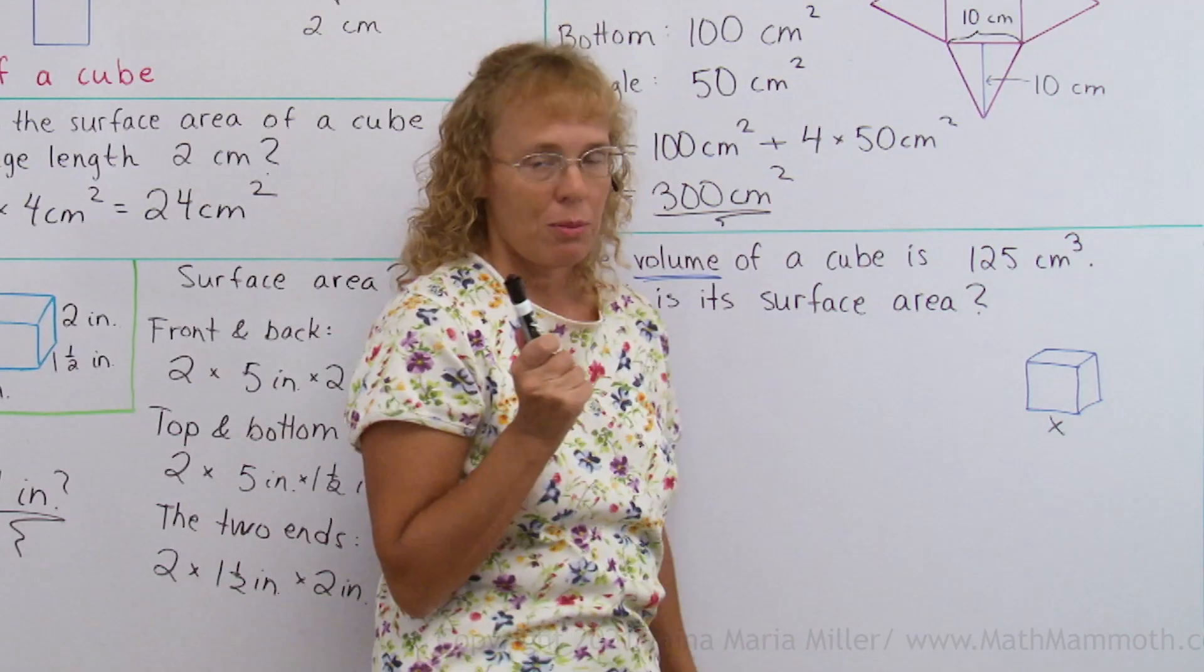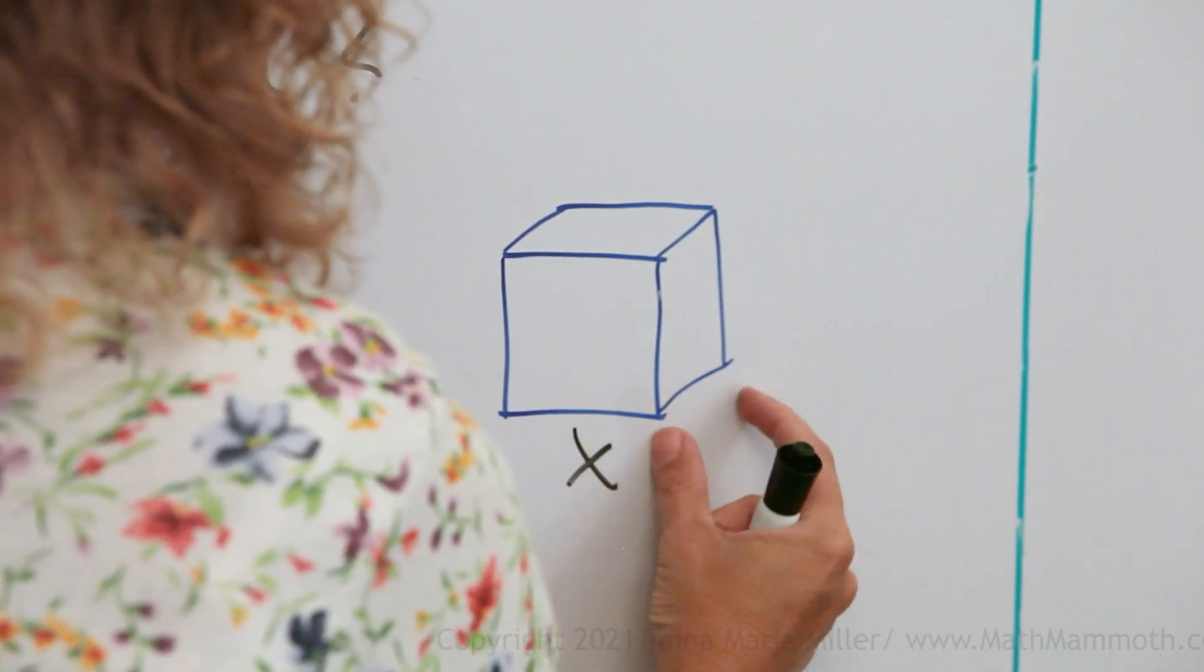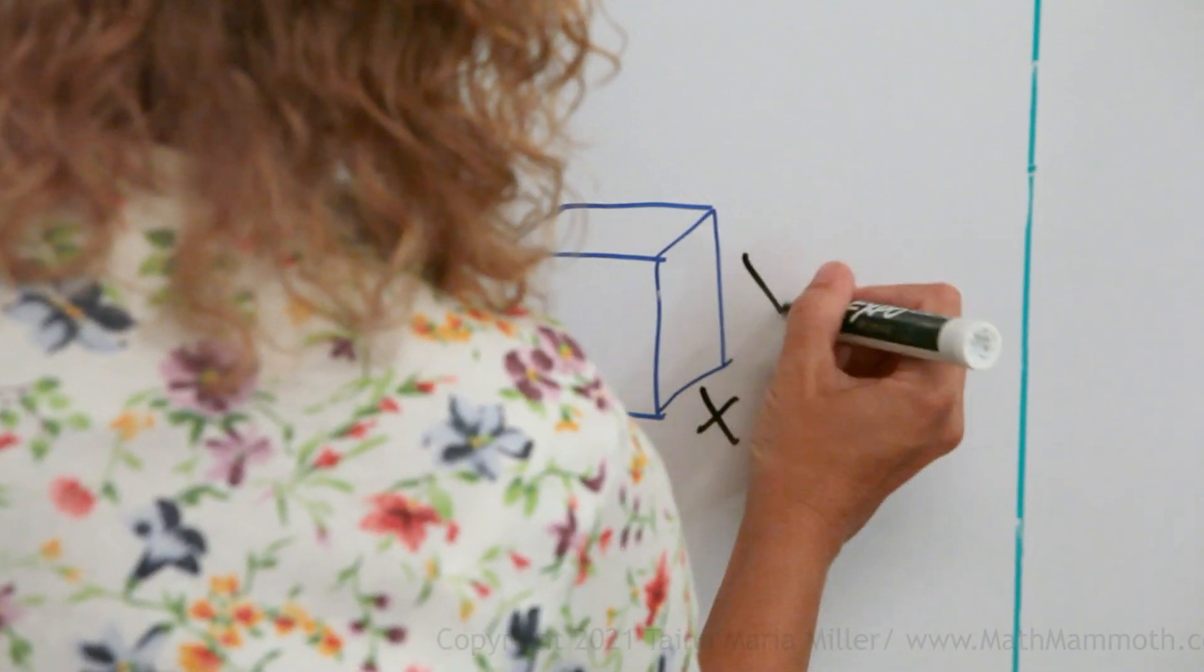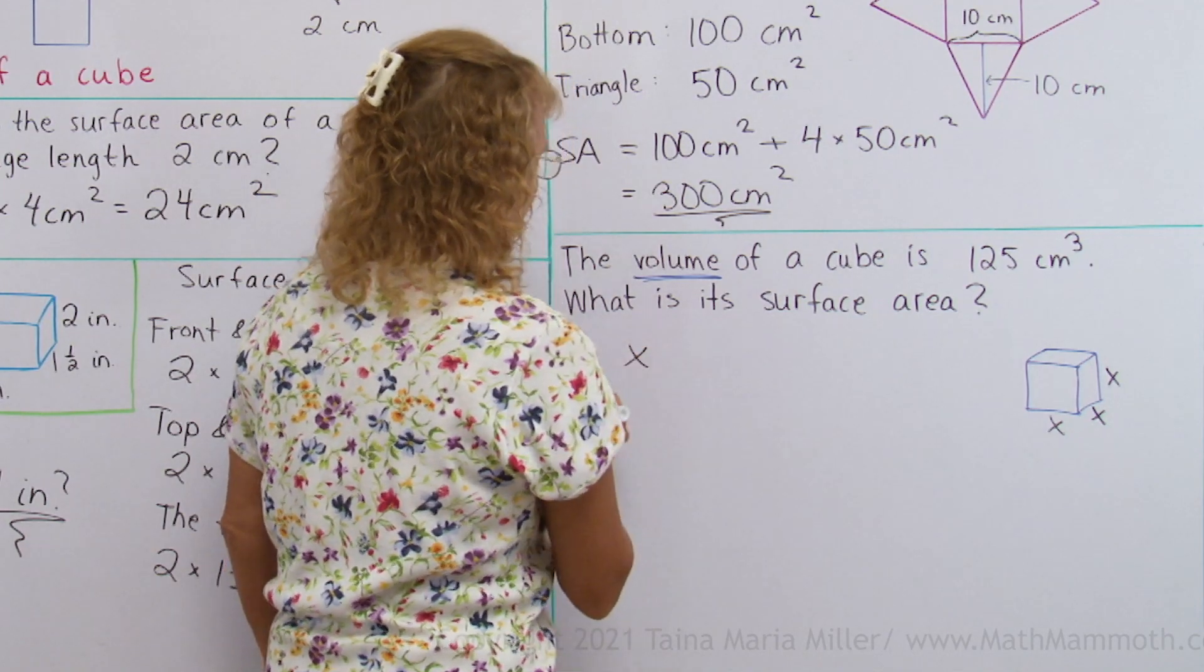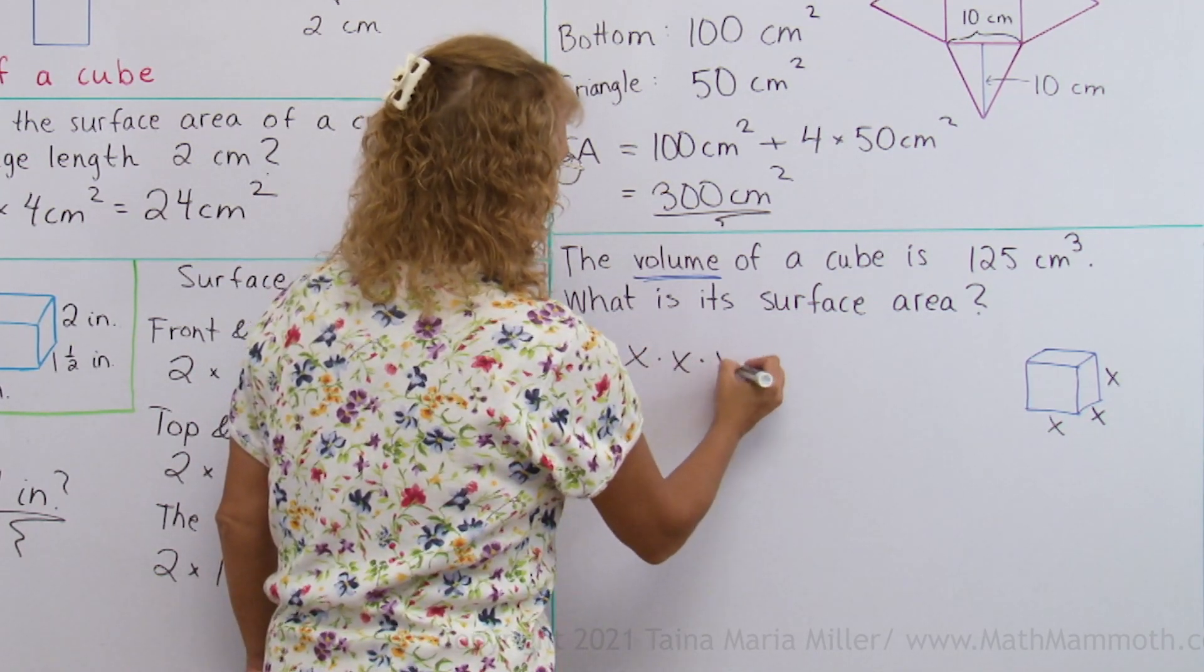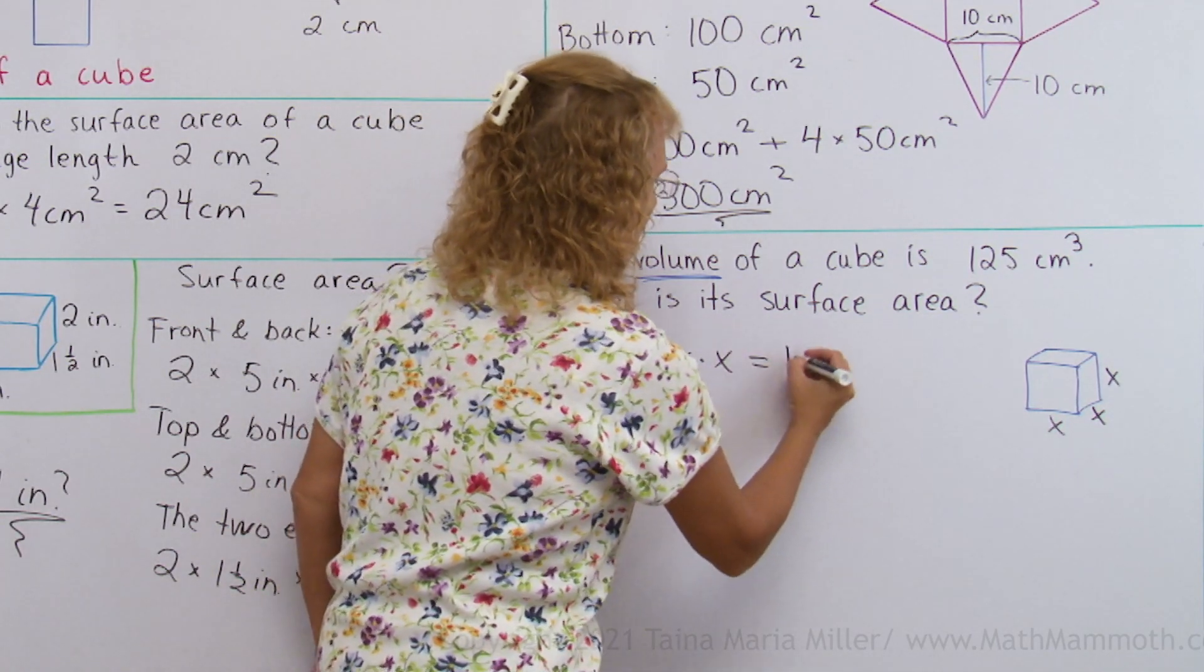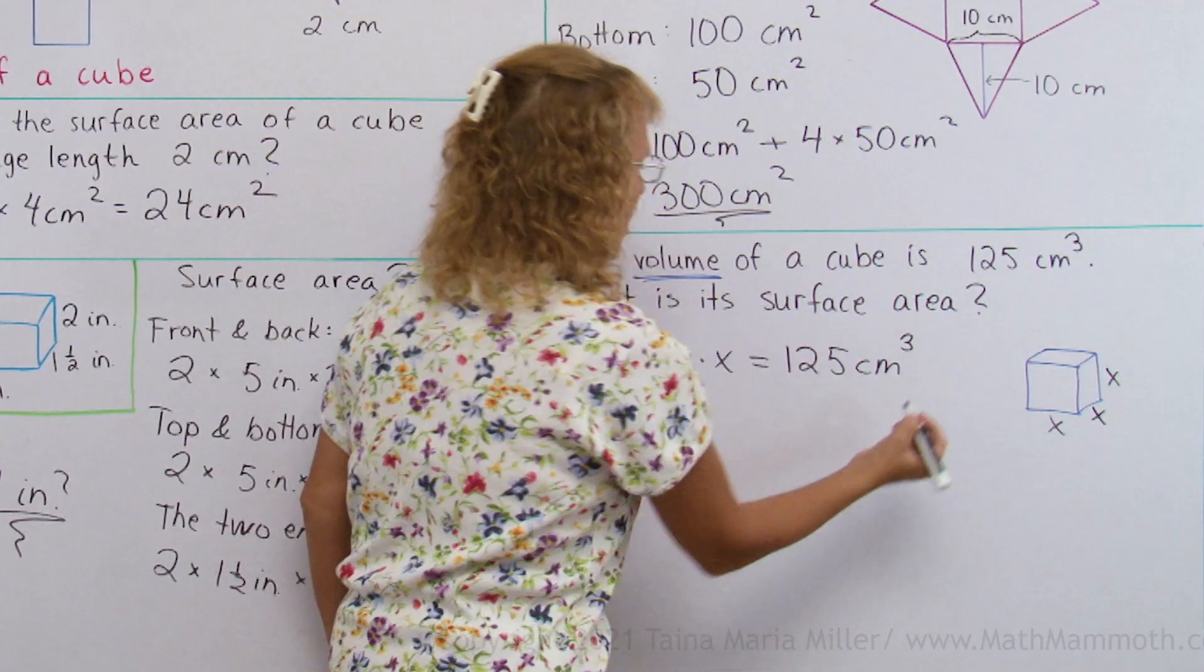Now we know the volume, and to calculate the volume, you would multiply this times this times this, right? And all of those are the same number. So we actually get an equation: x times x times x. This raised dot signifies multiplication. Is the volume, 125 cubic centimeters.